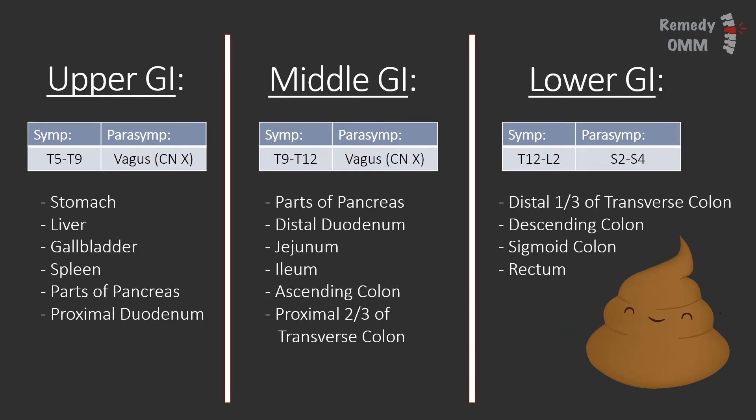These three segment sets you don't really have to memorize, but knowing them tends to help with complex questions. Many times in question stems they'll give you segments that exhibit TART changes on osteopathic exam, and knowing the segment sets can lead you to the correct answer. For example, to distinguish pancreatitis versus cholecystitis when given little information — if there are TART changes between T9 to T12, you can be more confident in going with pancreatitis, because cholecystitis would show changes higher up.